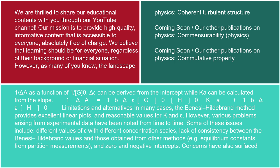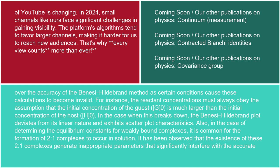Limitations and alternatives: In many cases, the Benesi-Hildebrand method provides excellent linear plots and reasonable values for K and ε. However, various problems arising from experimental data have been noted, including different values of ε with different concentration scales, lack of consistency between Benesi-Hildebrand values and those obtained from other methods such as equilibrium constants from partition measurements, and zero or negative intercepts. Concerns have also surfaced over accuracy, as certain conditions cause these calculations to become invalid. The reactant concentrations must always obey the assumption that G₀ >> H₀; when this breaks down, the Benesi-Hildebrand plot deviates from linearity and exhibits scatter.